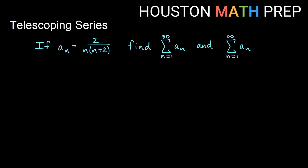Let's do one more example. We want to take the partial sum of the first 50 terms and then an infinite sum of the sequence 2 over n times n plus 2.